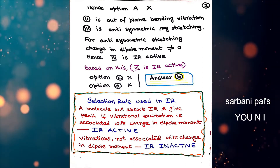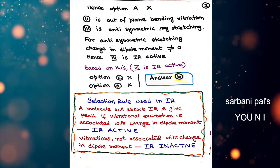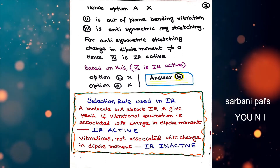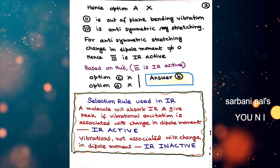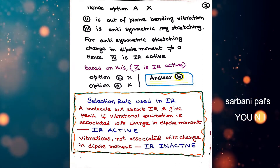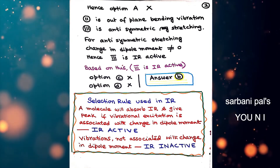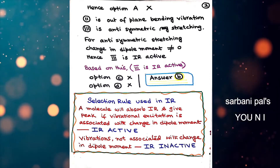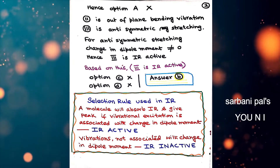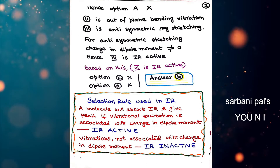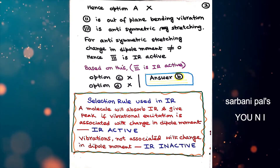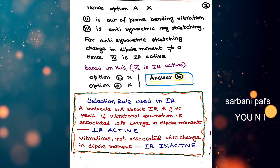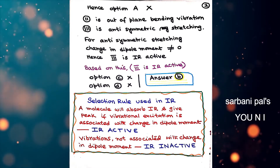In symmetrical stretching, dipole moment is 0 before and after. But in anti-symmetric stretching, initially dipole moment is 0, but after stretching those 3 bonds the dipole moment is not 0. Hence there is a net change in dipole moment and structure 3 is IR active. Based on this, options C and D are not the answers. Since option A was already cancelled and C and D are now cancelled, the answer is B.